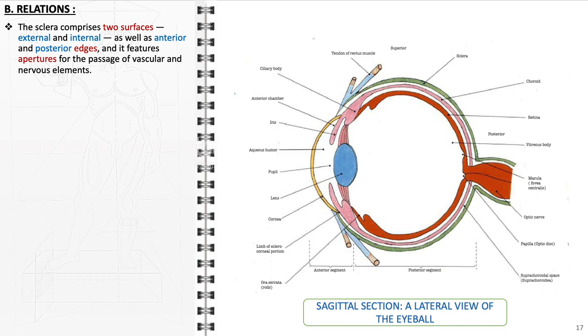The sclera has various anatomical relations that are crucial for its function and the overall structure of the eye. It consists of two distinct surfaces, the external and internal, as well as well-defined anterior and posterior edges.